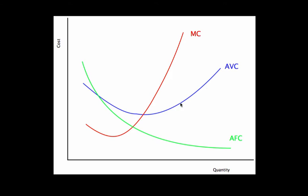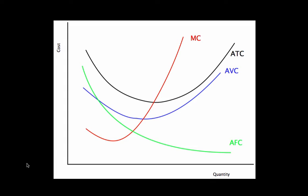Average variable cost is just: what is my variable cost per unit? Because we had this falling part of the average variable cost curve, and then if we get far enough along our diminishing returns range, we start dragging up that average. But average fixed cost only falls. Average total cost is just going to be the sum of these two curves. We don't have to sum them exactly, but we get this U-shaped curve, similar to the AVC curve — it's the sum of these two costs.